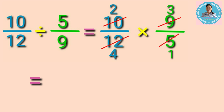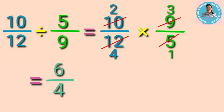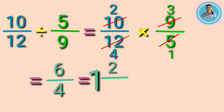So two times three equals six, and four times one equals four. The answer is six fourths. It is an improper fraction, so we need to simplify it. Six divided by four gives a whole number of one with a remainder of two, so we use two as the numerator and copy the denominator four, giving us one and two fourths.